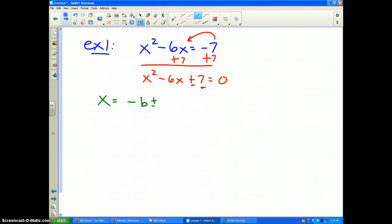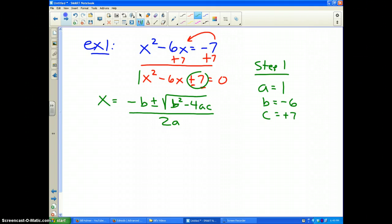Negative b plus or minus the square root of b² minus 4 times a times c, the whole thing divided by 2a. Step number one: write down what a, b, and c are. In this case, a is 1, b is negative 6, and c is positive 7. Those are the numbers that I'm going to use.